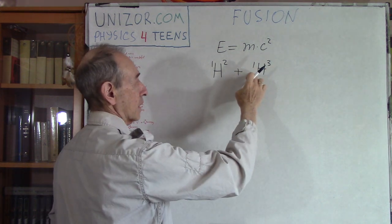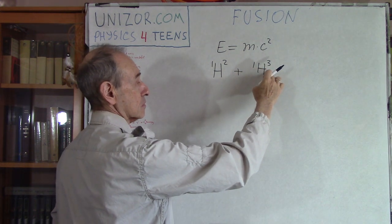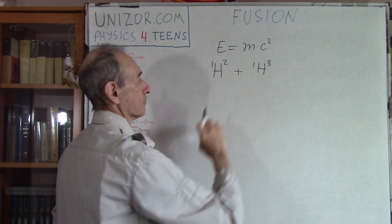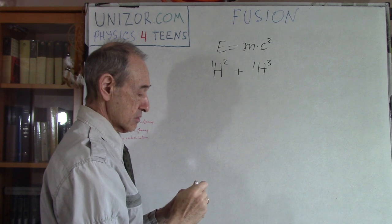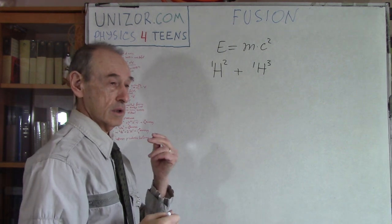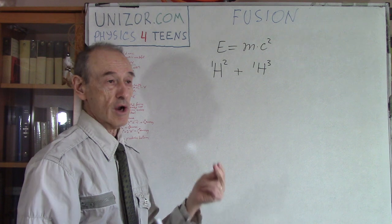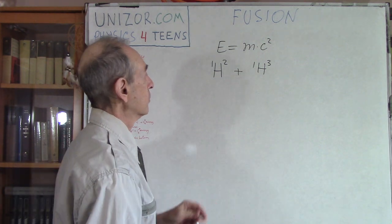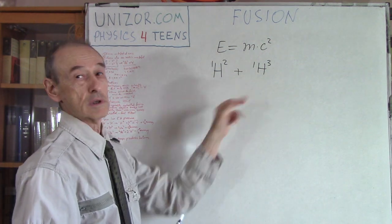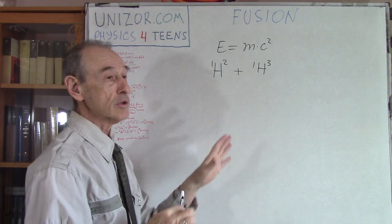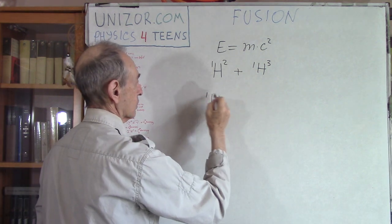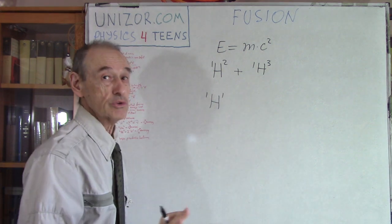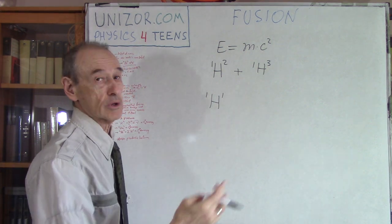Tritium has one proton plus two neutrons. It's still hydrogen because it has only one proton, so electrically the nucleus has electric charge of one unit, but the number of neutrons is different. In regular hydrogen this is one proton and that's it, no neutron, and obviously an electron around the orbit.